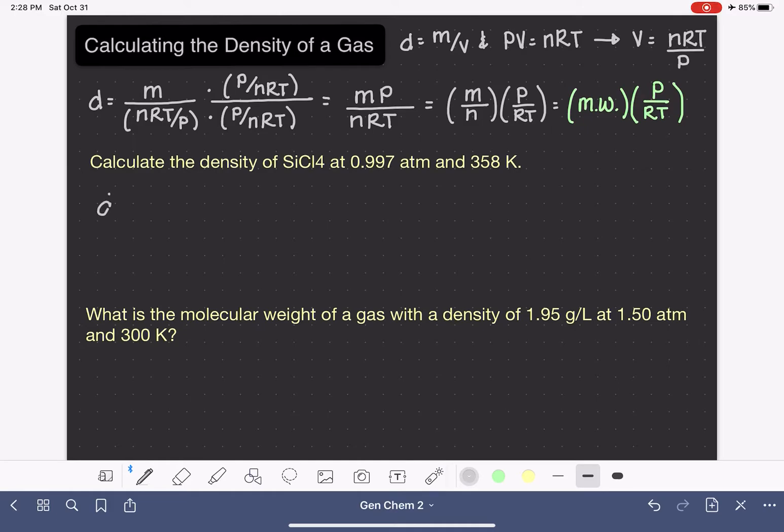So we're being asked to calculate the density of this particular compound. The density of a gas is going to be the molecular weight or the molar mass of the gas times the gas's pressure over the constant R times the temperature.